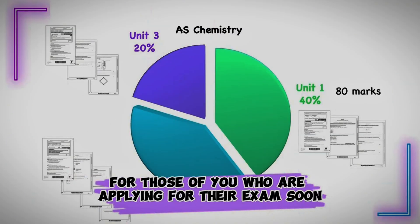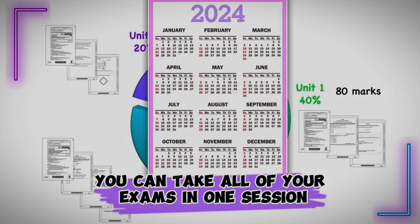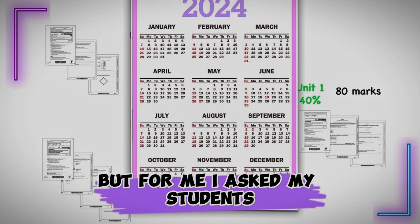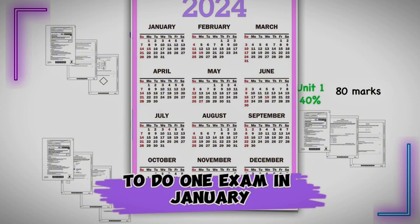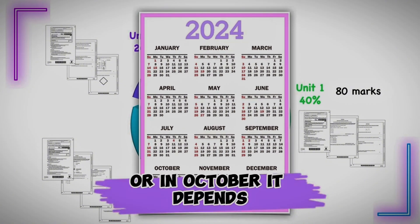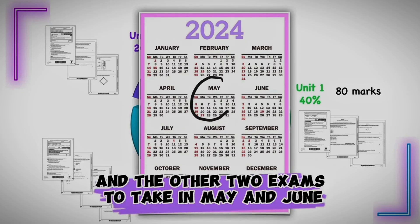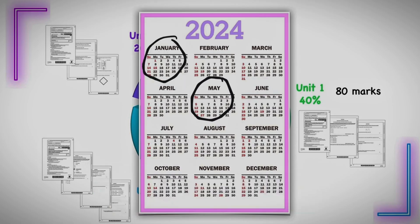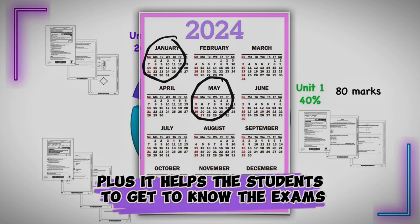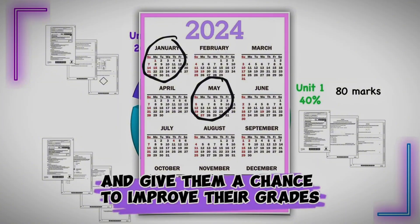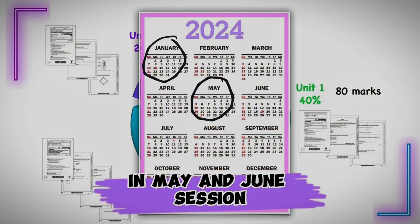For those of you who are applying for their exam soon, you can take all of your exams in one session. But I ask my students to do one exam in January or in October, it depends, and the other two exams in May and June. This helps to divide the effort. Plus, it helps the students to get to know the exams first in January and gives them a chance to improve their grades in May and June session.